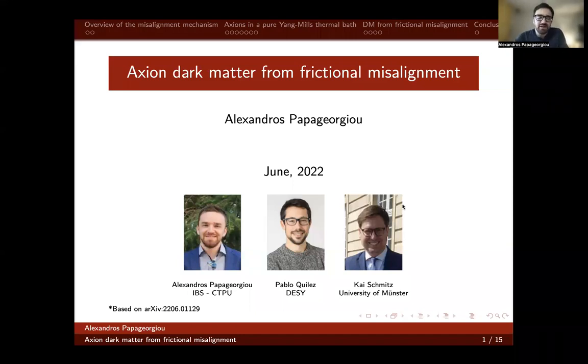Over the next 10 minutes, I'd like to give you a brief overview of our most recent work titled Axion Dark Matter from Frictional Misalignment. The basic idea behind this work is to modify the traditional axion misalignment mechanism for non-thermal generation of axion dark matter in the presence of additional friction.